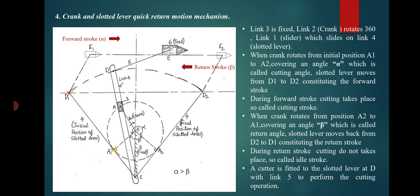When the crank rotates from initial position A1 to A2, it covers an angle alpha, which is called the cutting angle. The slotted lever moves from D1 to D2, constituting the forward stroke. So when the crank moves from A1 to A2, the slotted lever moves from D1 to D2, covering the cutting angle. This completes the forward stroke.